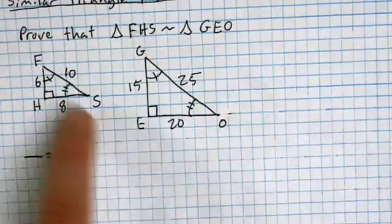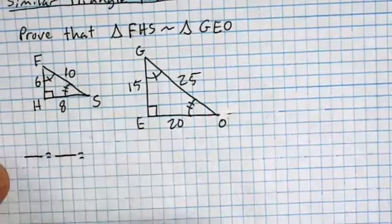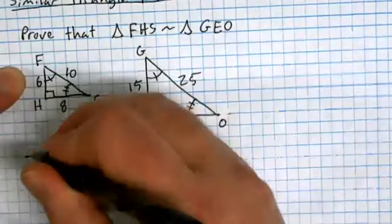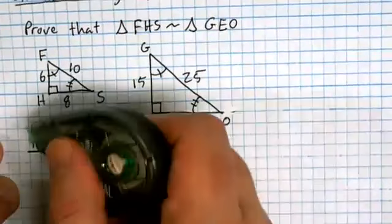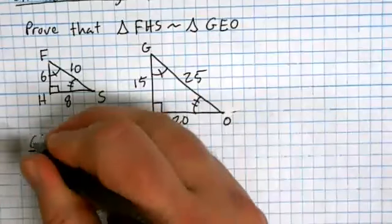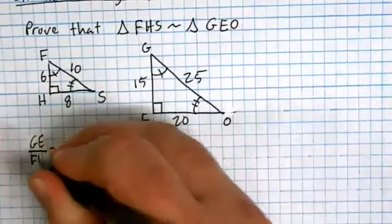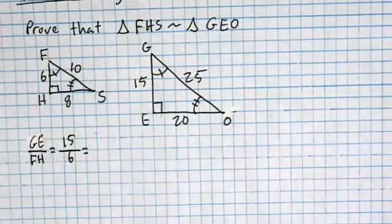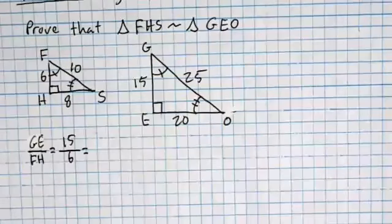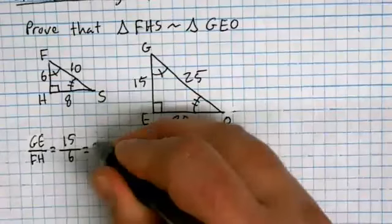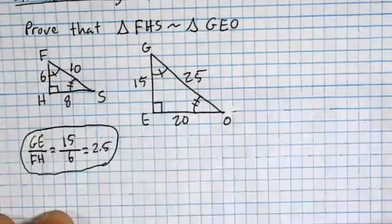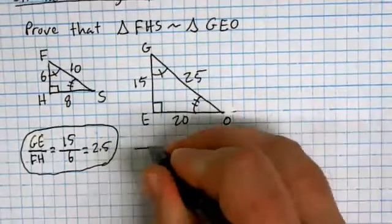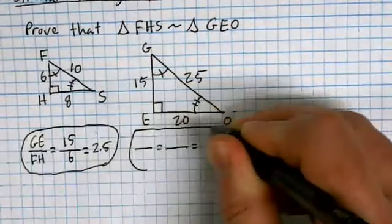Starting with the left side — GE over FH, which is 15 over 6, equals 2.5. Then EO over HS equals 20 over 8, also 2.5. The angle bubbles: H congruent to E, F congruent to G, S congruent to O. As I walked around, every person had a valid proof. The only missing piece for some was arrowheads on the connecting lines.